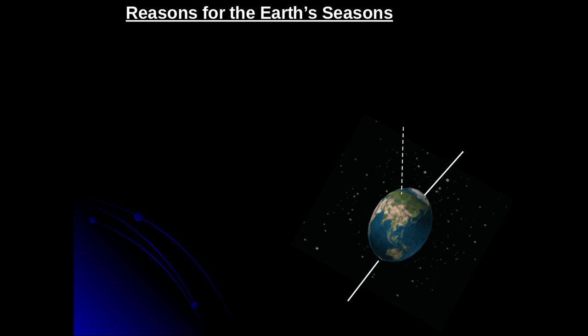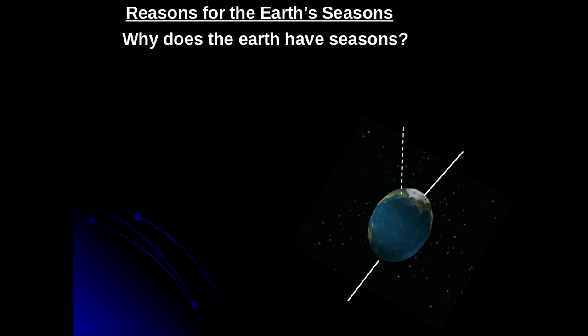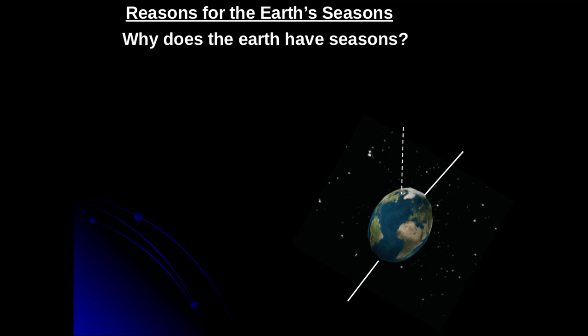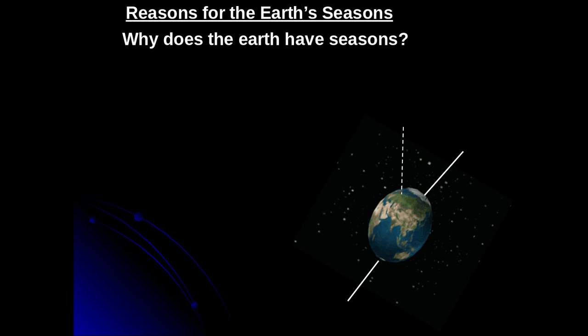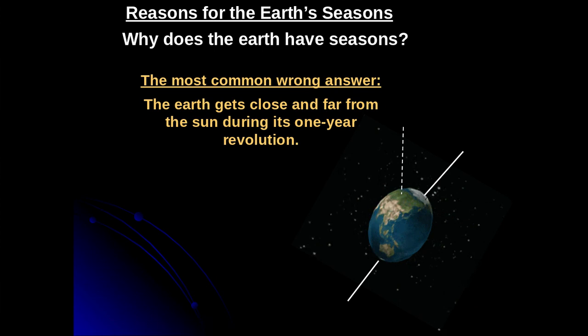In part two of the solar system, we're going to switch gears a little bit and talk about reasons for the Earth's seasons. The question that's often asked is why does the Earth even have seasons? We experience a winter period, a fall period, a spring period, and a summer period. So why does the Earth have seasons?